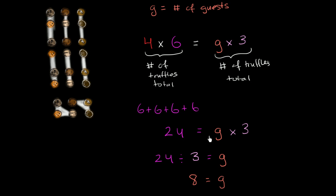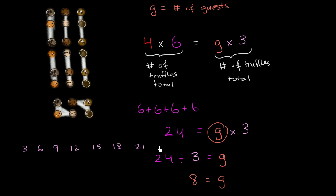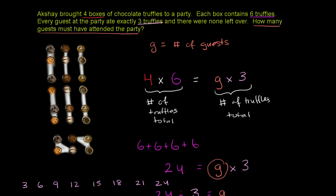Another way of thinking about it: some mystery number G times 3 equals 24, so what times 3 is 24? Think about multiples of 3: 3 times 1 is 3, times 2 is 6, times 3 is 9, 12, 15, 18, 21, 24 — that's 3 times 8. So G must be equal to 8. We had exactly 8 guests at the party.